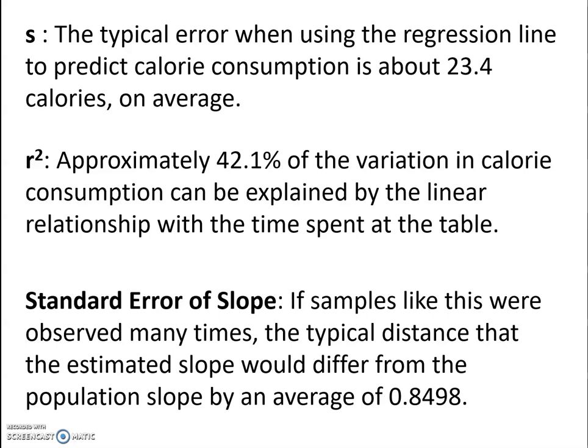r squared tells you your coefficient of determination. So approximately 42.1% of the variation in calorie consumption can be explained by the linear relationship with the time spent at the table. The rest of it is explained by other unknown factors.